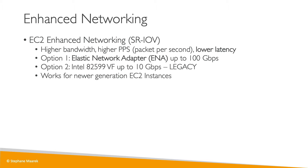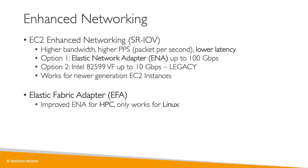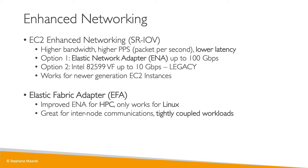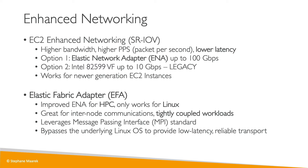EC2 enhanced networking, especially the ENA adapter, works for newer generation EC2 instances. We also have the Elastic Fabric Adapter (EFA), which is an improved ENA dedicated for HPC (High Performance Computing). It only works on Linux. The idea is that if you have a lot of inter-node communications that are tightly coupled within the same cluster, they get better network performance. This leverages the MPI (Message Passing Interface) standard, and EFA bypasses the underlying Linux OS to provide even lower latency with reliable transport.